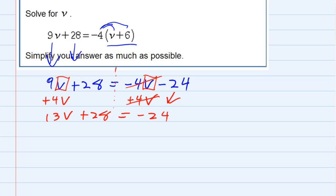And so now I've got the v's on one side, that's good, but I gotta get the v's by themselves. So I need to get rid of the plus 28, and I can do that by doing the opposite and subtracting 28. That will move that term over to the other side.